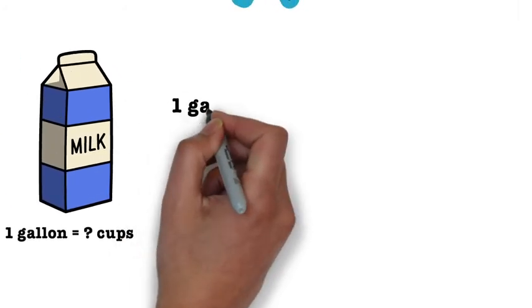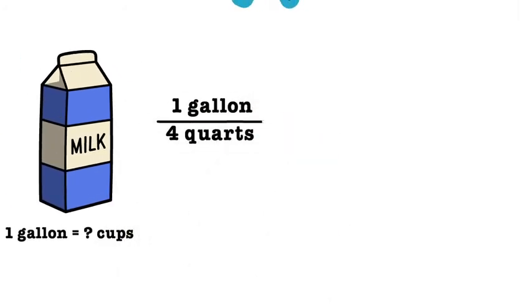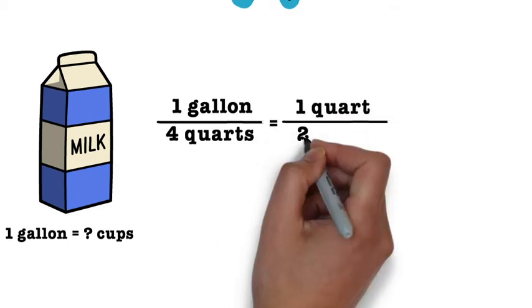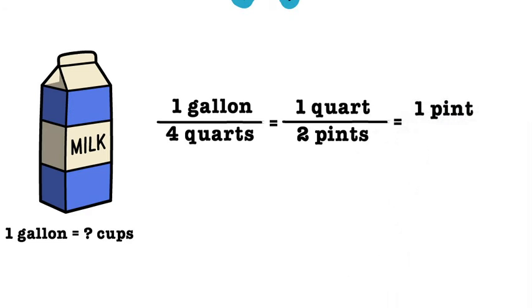First, we need to set up a ratio with the conversions we have with gallons. We can write one gallon over four quarts. Next, we will write a second ratio of one quart to two pints. Then, one last ratio is one pint equals two cups.